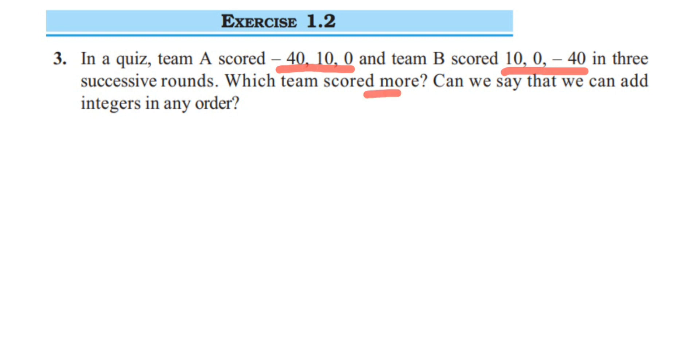To find out, we have to first add the integers, add the scores, and then find out. Later we'll see if adding them in any sequence gives the same answer or a different answer. So let us first add them and see which team has scored more.